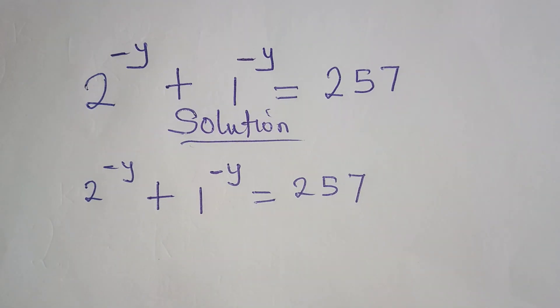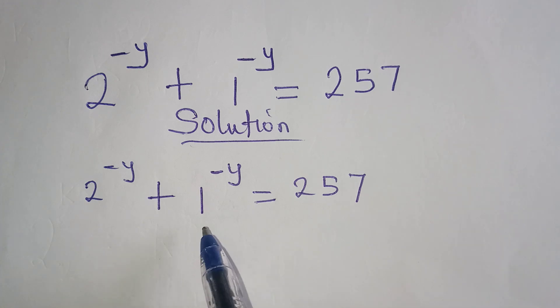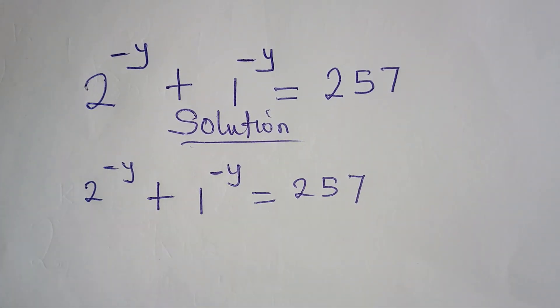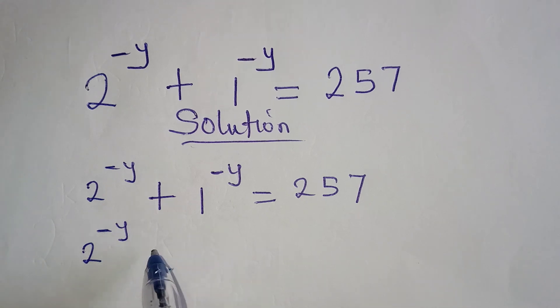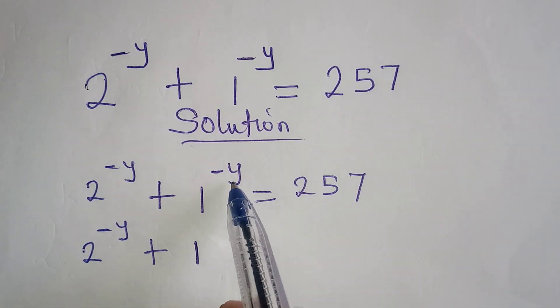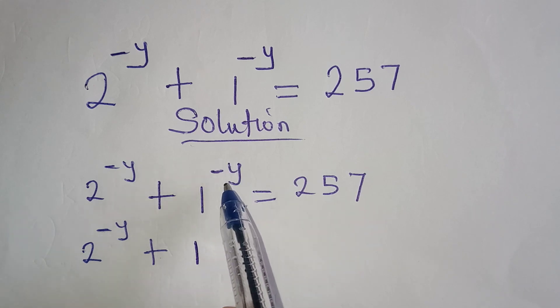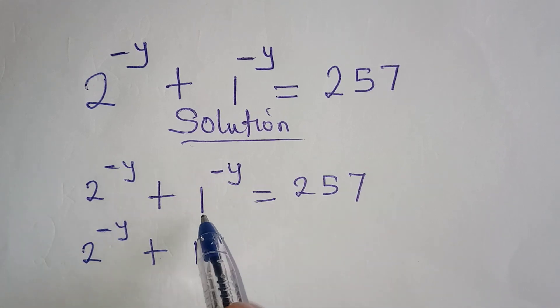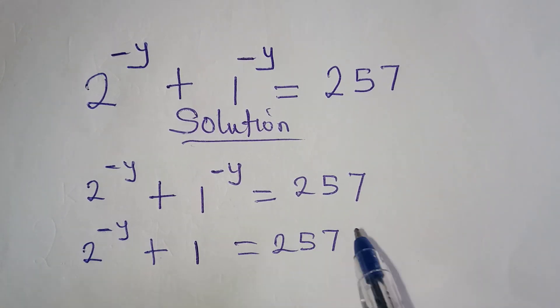Now there is one thing you must know. 1 raised to the power of any number will still give you 1. So we are going to have 2 to the power of negative y plus this is going to be 1. Whether the number is positive or negative, you are still going to have 1. And then this is equal to 257.